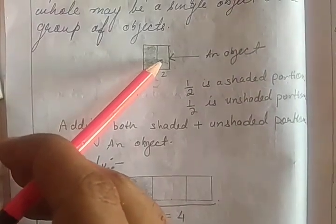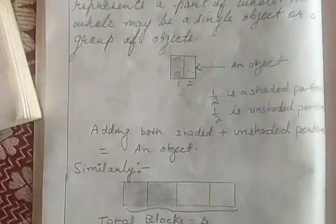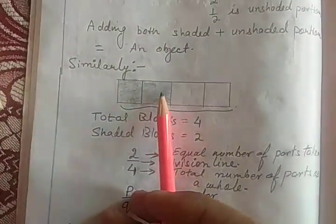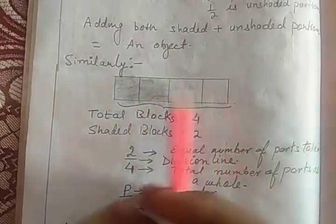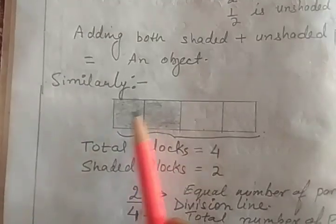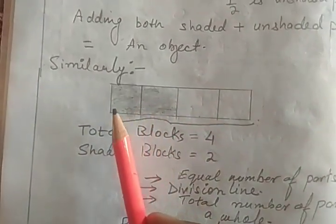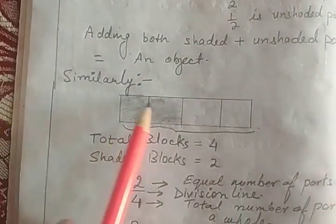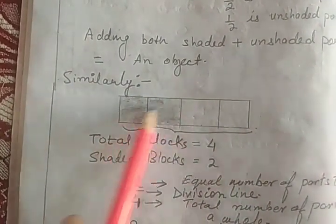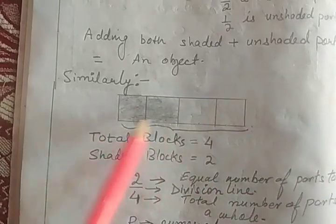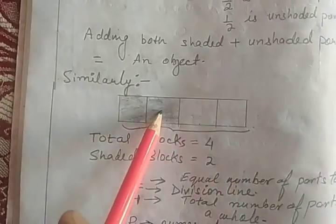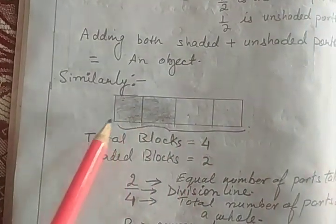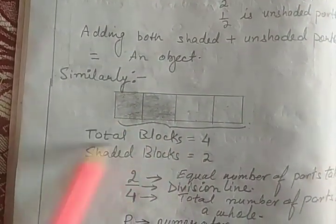Similarly, with 1, 2, 3, 4 — 4 blocks are there in which 2 blocks are shaded. The number of parts taken is 2, upon total number of parts which is 4, means 2 upon 4.